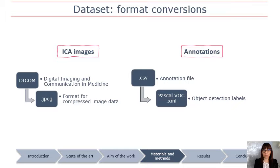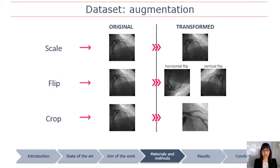To have a format compatible with the CNN used, the ICA images provided in DICOM format — the standard for medical imaging information — were converted into JPEG format, while the annotations were converted into Pascal VOC XML format, where VOC stands for Visual Object Classification and is the standard format for object detection labels. The main idea is to feed the model with ICA images without performing preprocessing that could alter the original characteristics of the image and move away from the real clinical context.